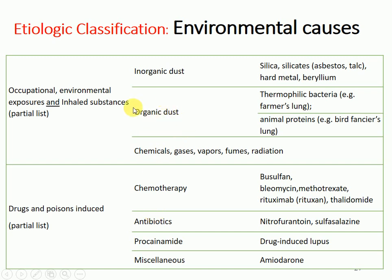In the case of organic dust — dust containing organic materials — for example, someone may inhale dust containing hemophilic bacteria, causing lung damage. This is commonly found in farmers' lungs. For those involved in livestock keeping, such as keeping birds, they may inhale animal proteins from the birds' droppings. Also, there are inhaled chemicals, gases, vapours, fumes, and radiation, which go into the lungs and damage the interstitial parts.